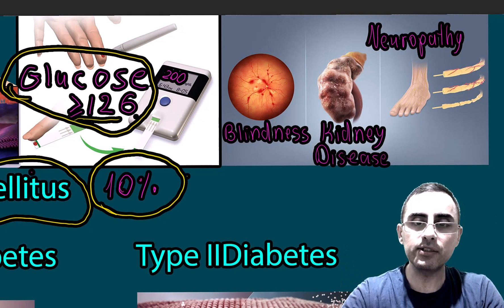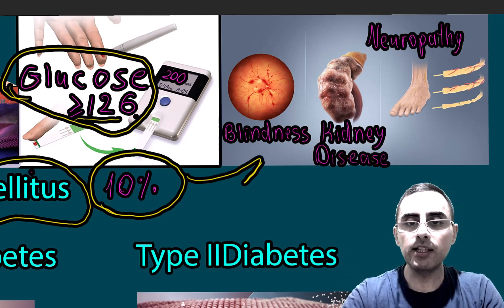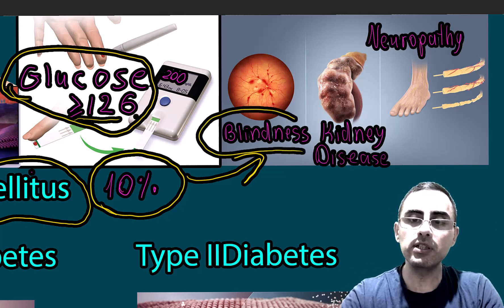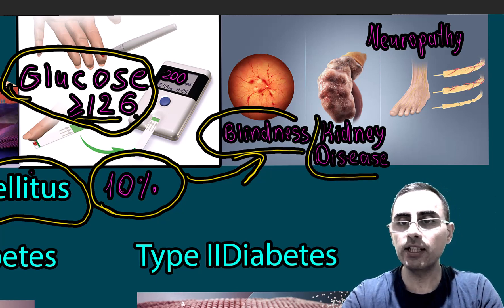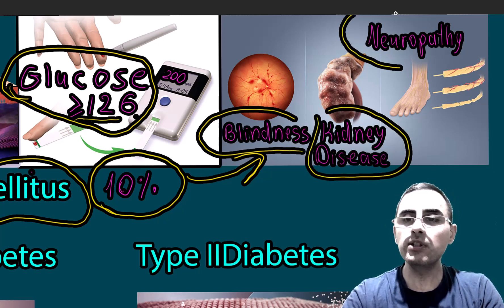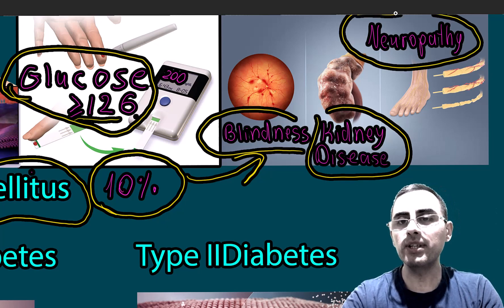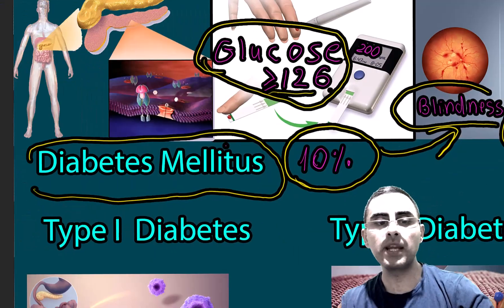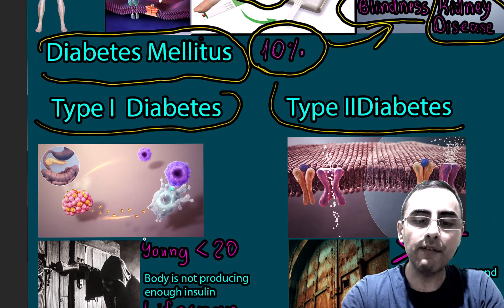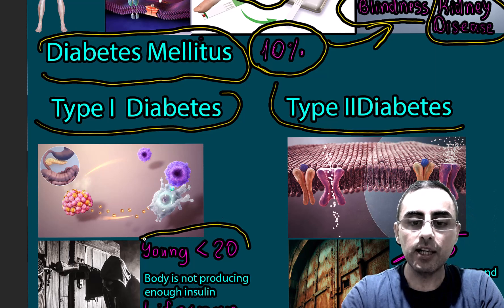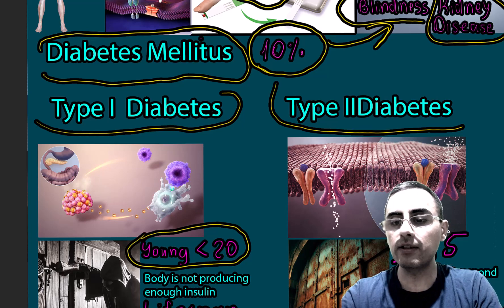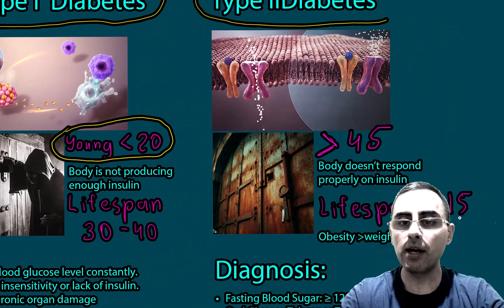If left untreated, diabetes has serious consequences and complications, including blindness, kidney problems known as diabetic nephropathy, and neuropathy. Diabetes also increases the risk of heart attack, stroke, and other serious diseases.